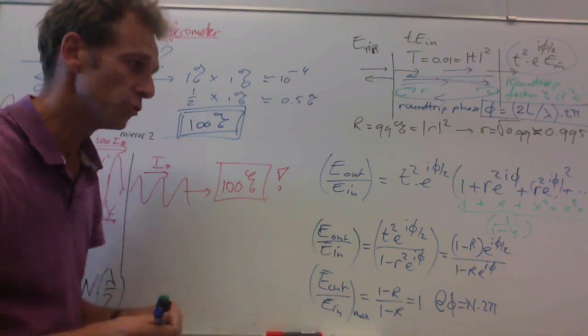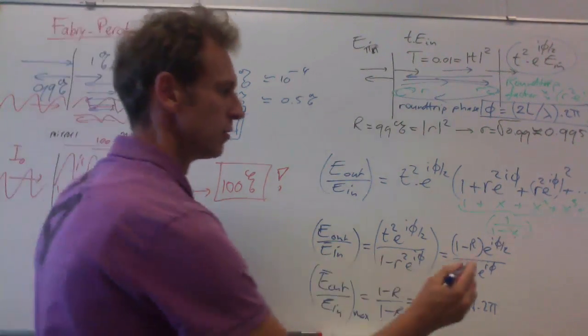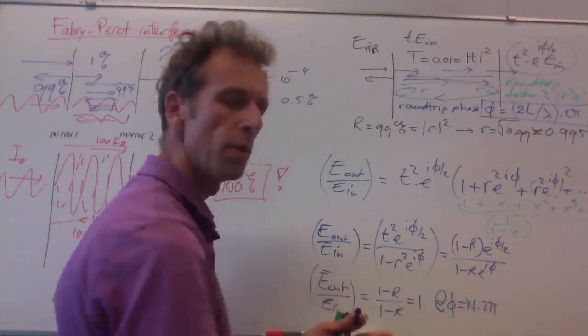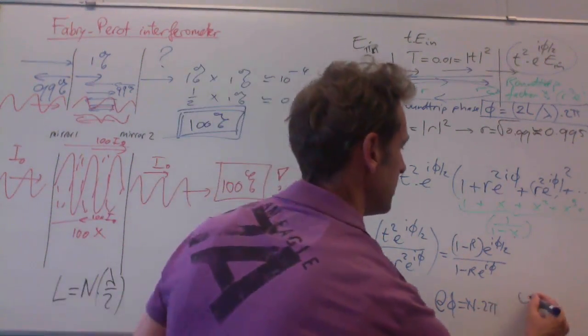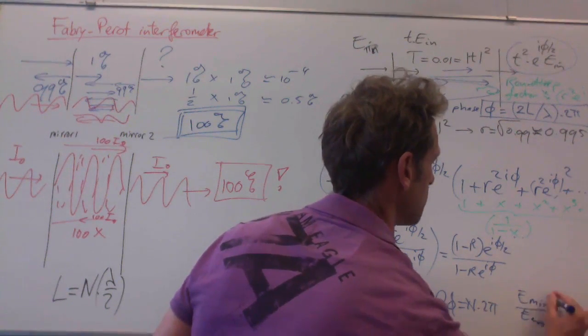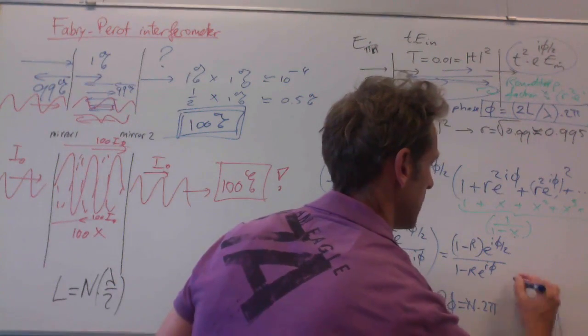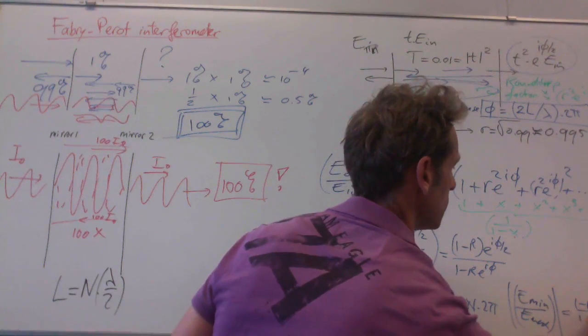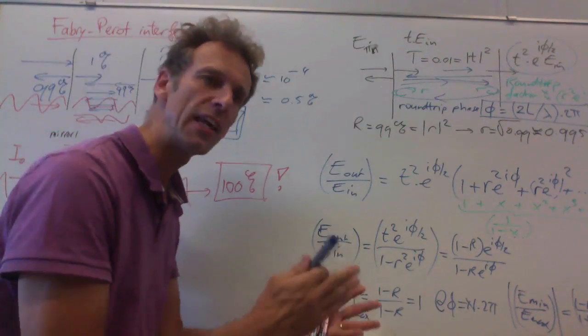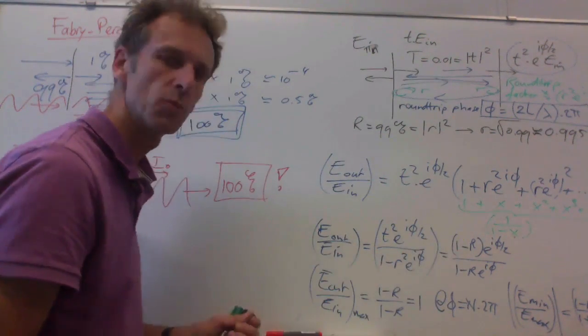Whereas if the light doesn't fit, so if this phase is a multiple of 2π plus π, then the minimum transmission amplitude absolute value is (1 - R) divided by (1 + R). And the minimum intensity is the amplitude squared, so that's the number squared.